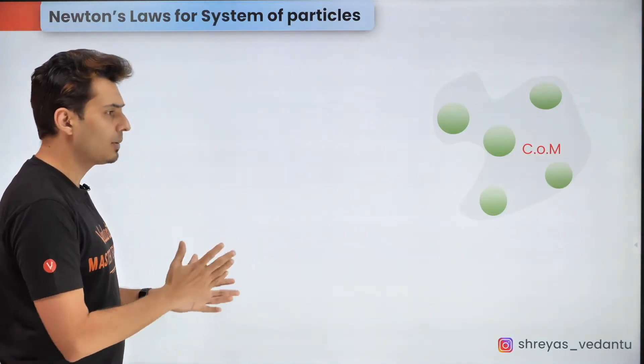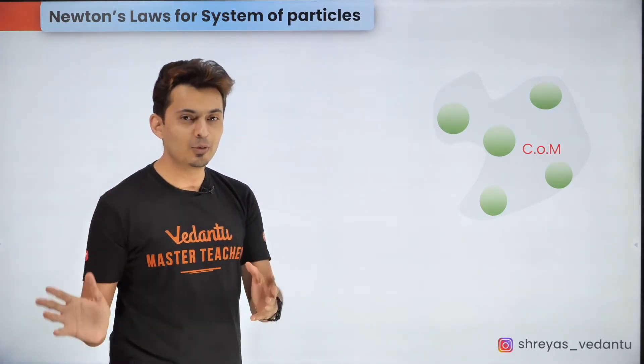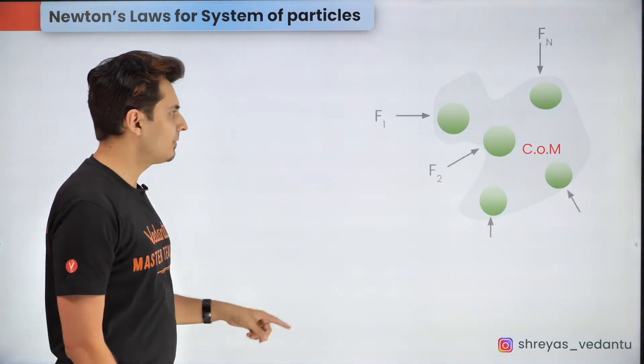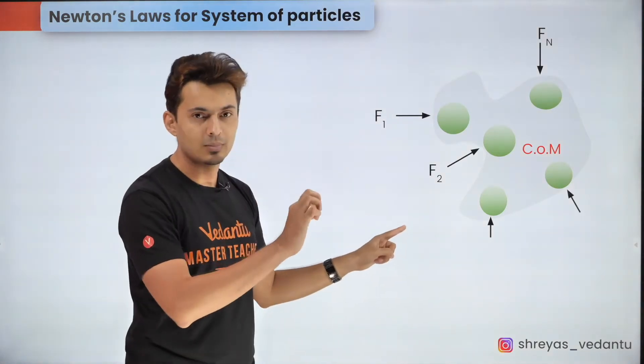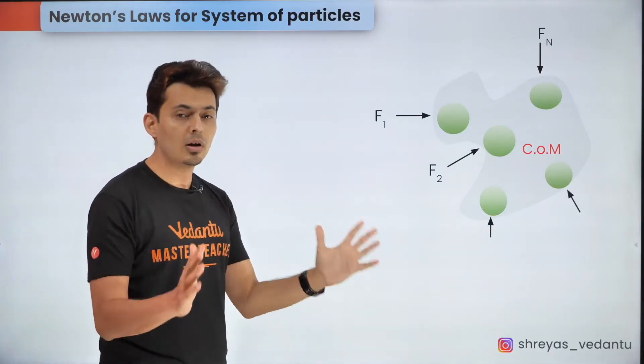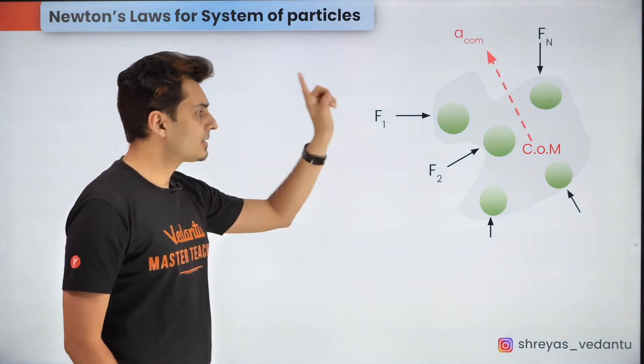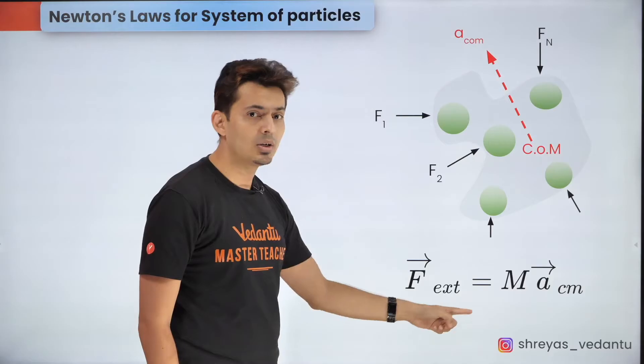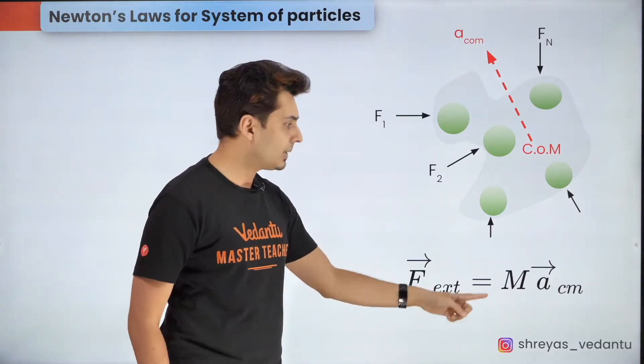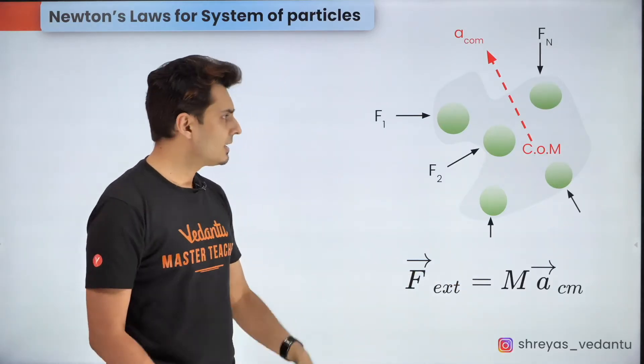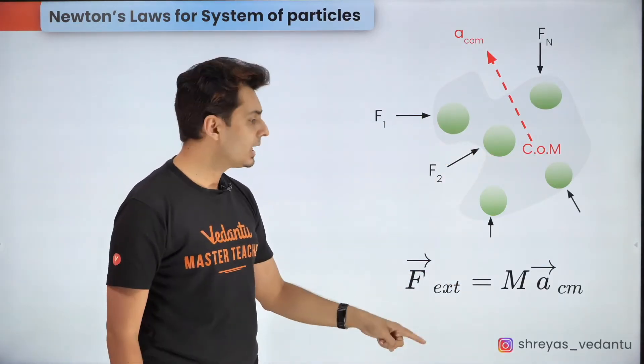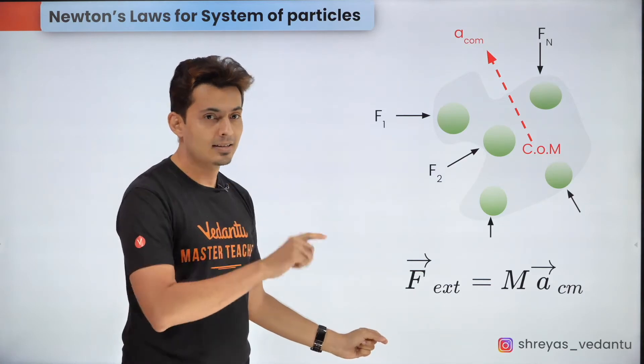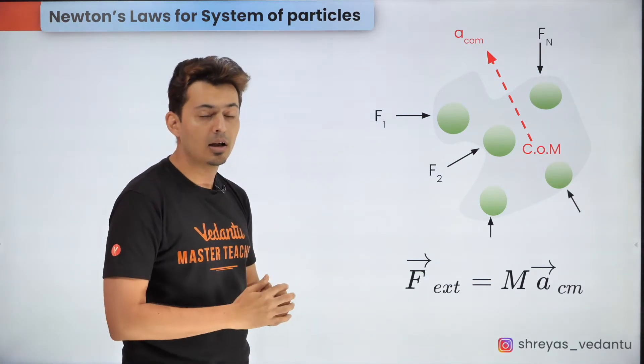Now if the particles are in motion there might be some forces and the relationship between the forces and the motion is given by Newton's modified law for system of particles. If you have external forces acting on a system of bodies or particles and the forces are not balanced then it causes the center of mass to accelerate. This net external force is going to be equal to the total mass of the system multiplied by the acceleration of the center of mass. Notice that the internal forces have no role to play in the acceleration of center of mass. It's only the external forces which contribute to the acceleration of the center of mass in the direction of the net unbalanced force.